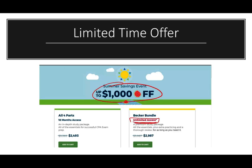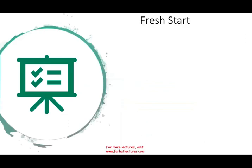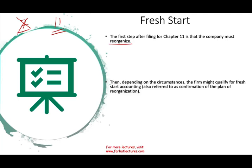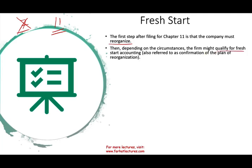Today we're going to be talking about Fresh Start. Remember, the company has the option of filing Chapter 7, which is liquidation — going out of business — or Chapter 11. Chapter 11, which we looked at in the prior session, is a form of reorganization. The first step after filing Chapter 11 is that the company must reorganize. Hopefully after reorganizing, the firm might qualify for fresh start accounting, also referred to as the confirmation of the plan of reorganization.